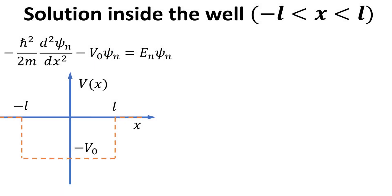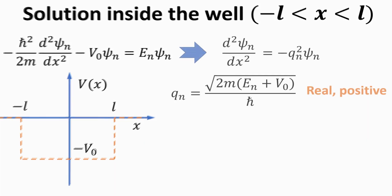Next, how about inside the well? The potential in this case is simply minus V0. The time-independent Schrödinger equation can be written in a slightly cleaner form, where we have defined qn to be square root of 2m multiplied by En plus V0 divided by ℏ. En plus V0 is a positive number, since En for confined states is a number between 0 and minus V0. Thus, qn is defined as a real positive number.